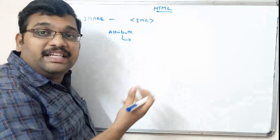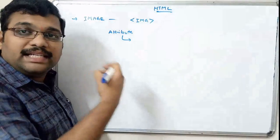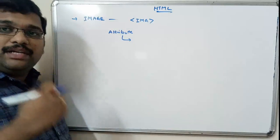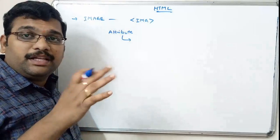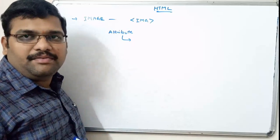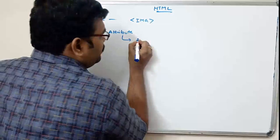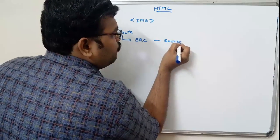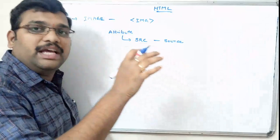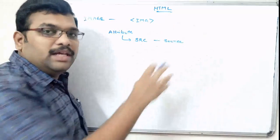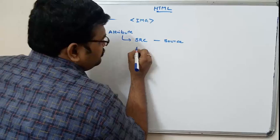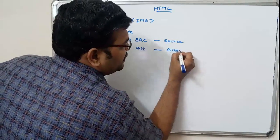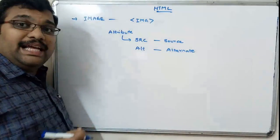Attributes are some additional information. Now let us see the attributes of the image tag. The first one — in order to display the image on the screen, we have to provide the location itself. That means we have to use source (src), which is the location where the image exists. From that source, the image will be displayed on the browser.